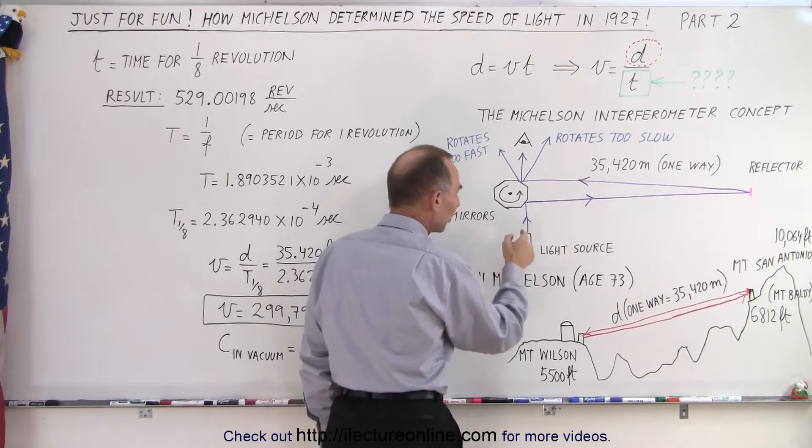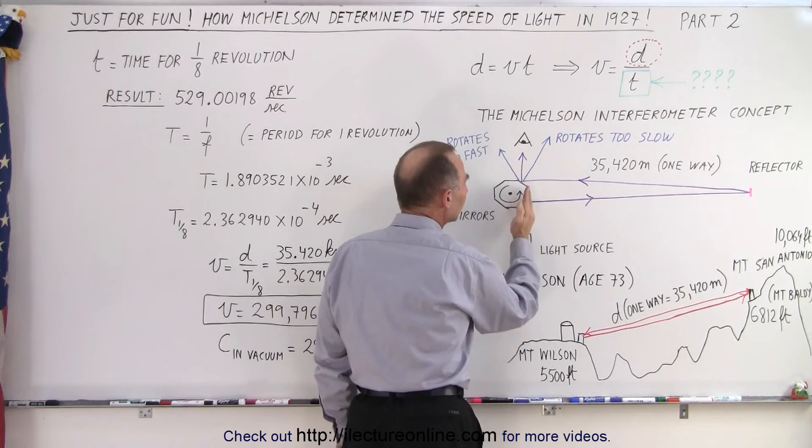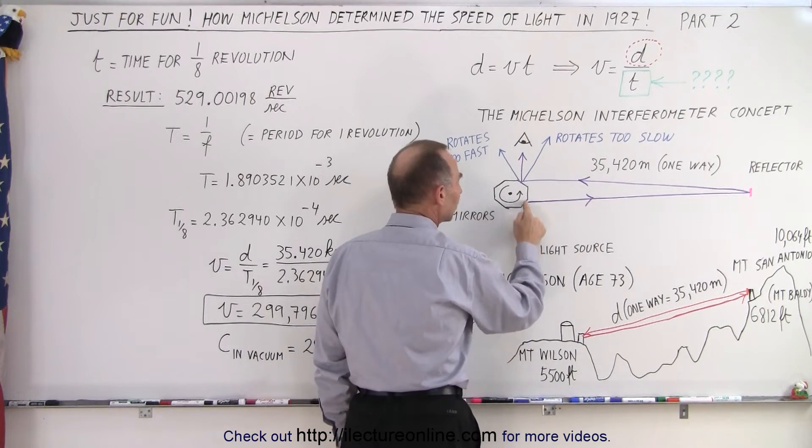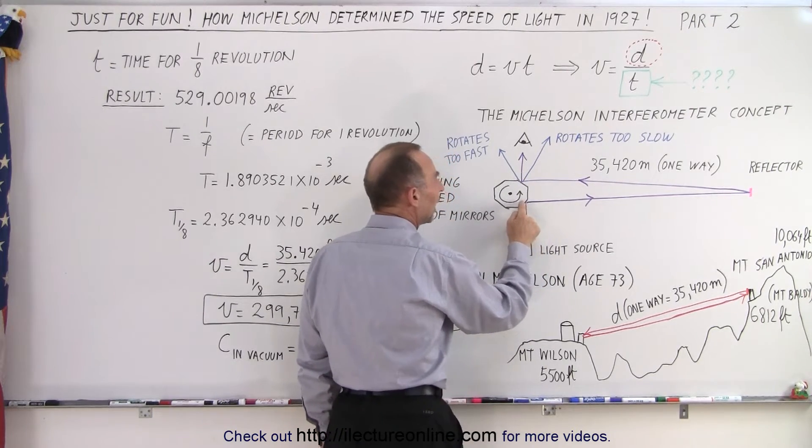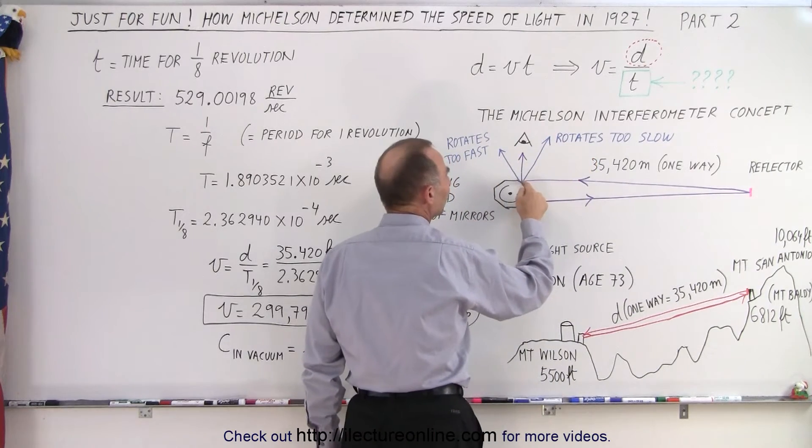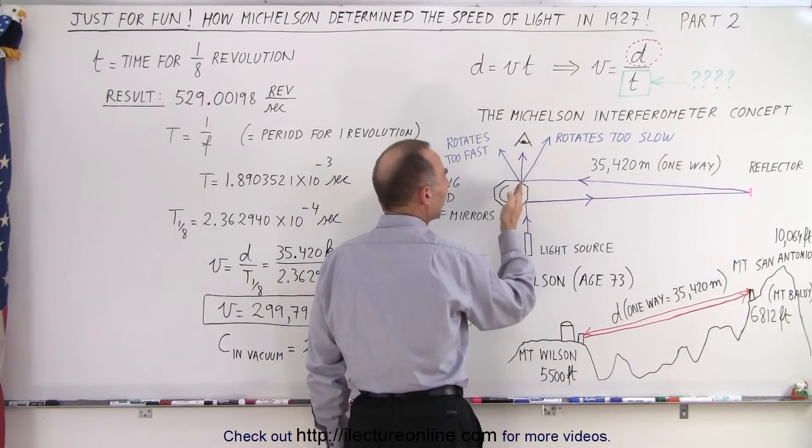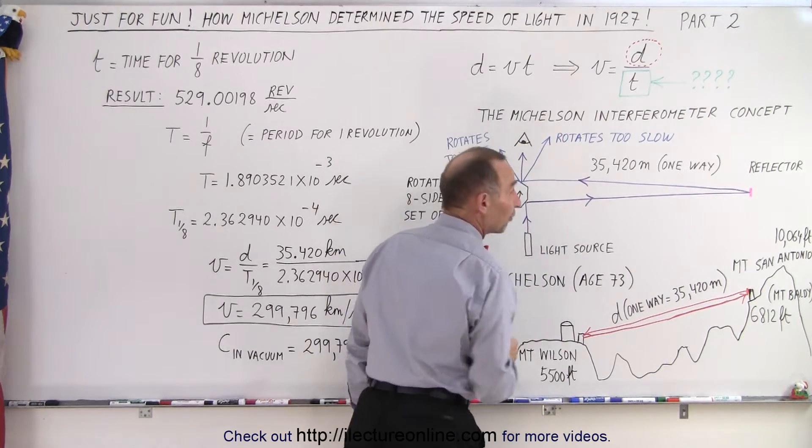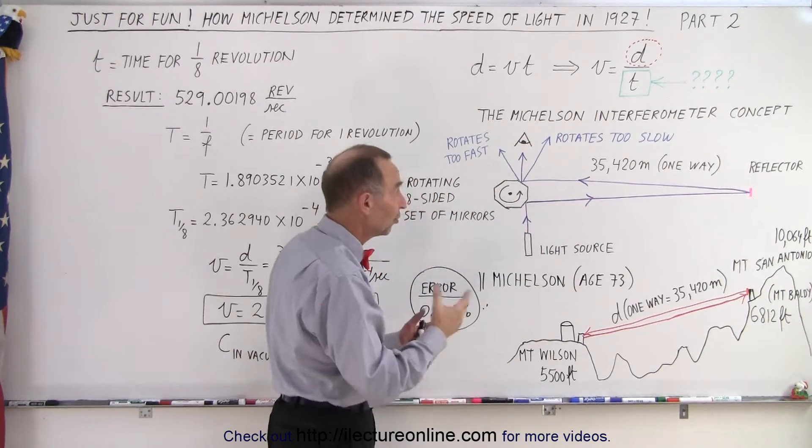But now what happens is you make it rotate. So what happens is first, when you rotate it slowly, you see that this mirror would slowly start moving in that direction. So the light would bounce off this mirror and it would then hit the reflector. Then it would come back, hit off this mirror. And if the rotation wasn't fast enough, the reflection would be at an angle like this. And so the observer could not see something, wouldn't see any light.